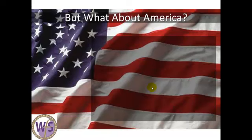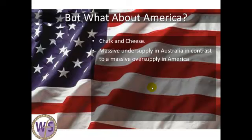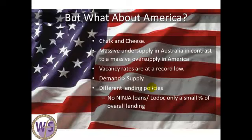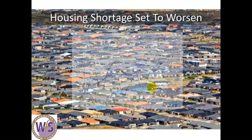But people say, what about the rest of the world? What about America? What about Greece? It's absolutely chalk and cheese to try and compare the two. There was a massive undersupply in Australia in contrast with a massive oversupply in America. Vacancy rates in Australia are very low, whereas in America there are suburbs that are empty. We simply have greater demand and not enough supply. Very different lending policies as well. Over there, they actually gave loans to people who had no income, no jobs, and no assets — the so-called NINJA loans. In Australia they simply don't do that. No jingle-key lending either. In America, if you could not afford the mortgage anymore, you simply post the keys back to the bank and walk away — they don't come after you for anything else. That doesn't happen in Australia. Don't pay your mortgage and you're in serious trouble.